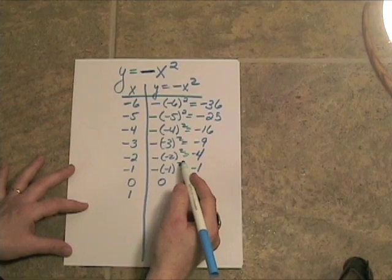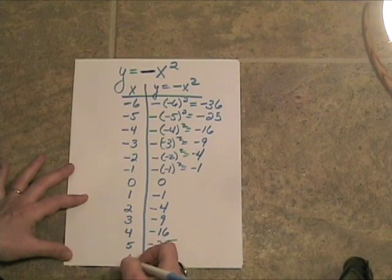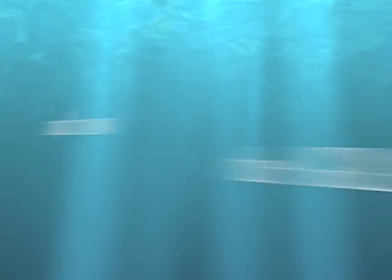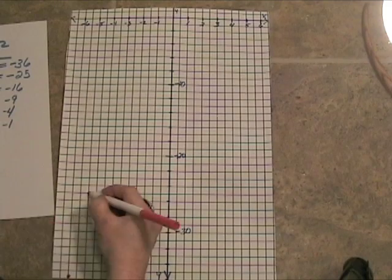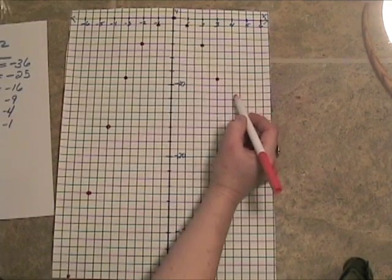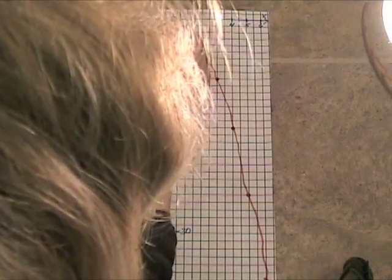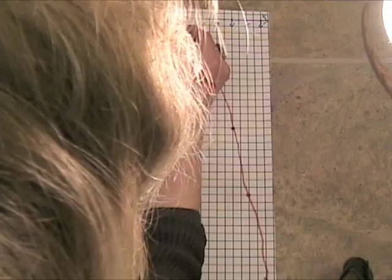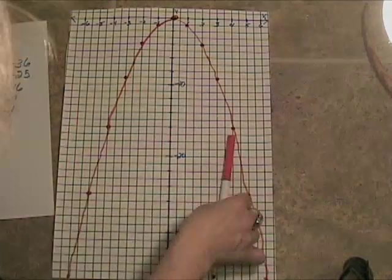Now we put in positive 1. Positive 1 squared is 1. The opposite of 1 is negative 1. So it's happening again. We put in the 2, negative 4. Positive 3, negative 9. Positive 5, negative 25, and the 6, negative 36. When we graph this, in this case, the vertex is at the top. It's the highest point on the graph so it's called a maximum. And you still have your line of symmetry being the y-axis.